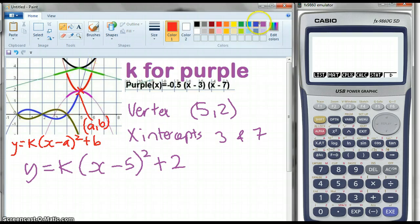If I actually tried to read the shape of the graph, I could go across one and down approximately a half. So it looks like k is negative a half. Let's see what happens.